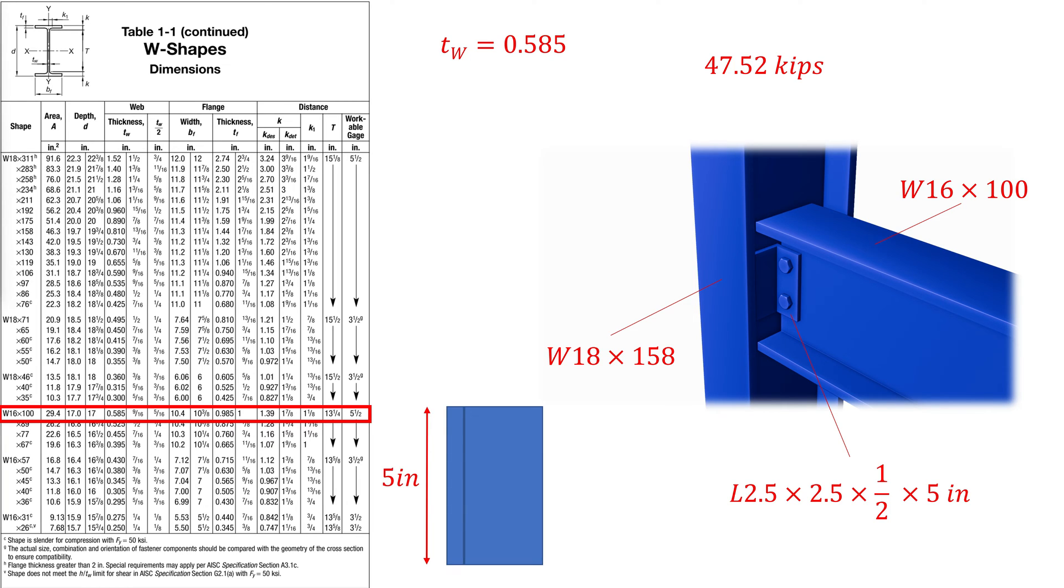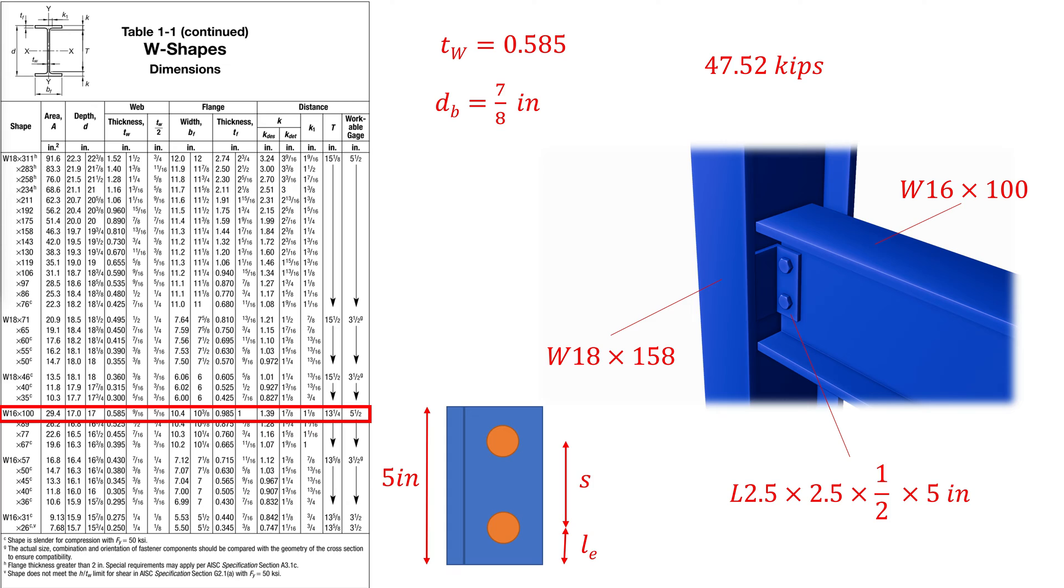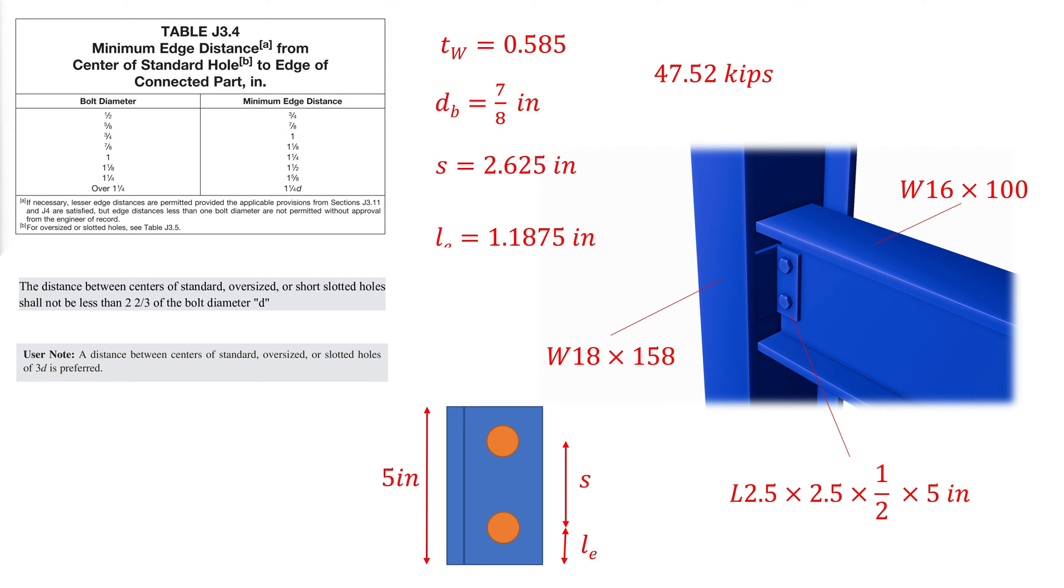Next step is to determine the bolt size, spacing, and edge distance. We will start with an initial guess of two 7/8 inch diameter bolts. From AISC specifications section J3.4, the minimum distance between bolt hole centers for standard holes should be 2 and 2/3 of the bolt diameter. Additionally, the specifications provide a note that says a spacing of 3 times the bolt diameter is preferred, and that is what we will be using. This makes the spacing 2.625 inches. Because we want to keep the bolts equally spaced from the edges, the edge distance would be 1.1875 inches. From AISC table J3.4, we can find out the minimum required edge distance for a bolt size of 7/8 inches. Because the available edge distance is more than the minimum required, we can confirm the initial geometry and proceed to checking the strength.